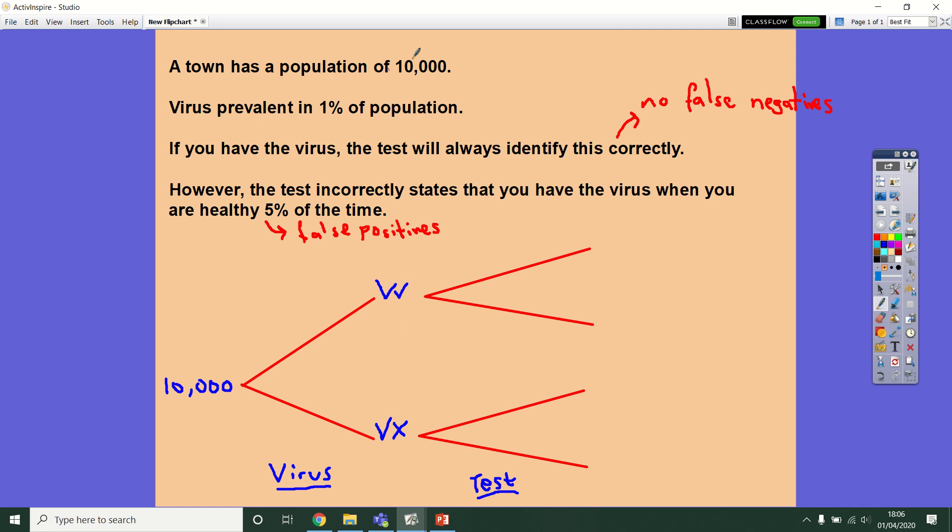So 1% of the people have the virus. That's going to be 1% of this, which is 100. Which leaves 9,900 for those that are healthy.